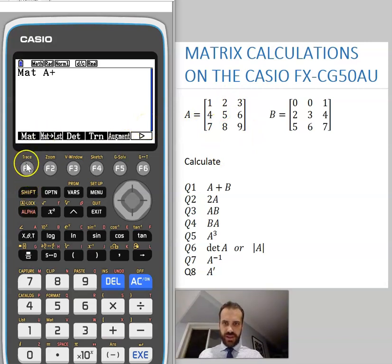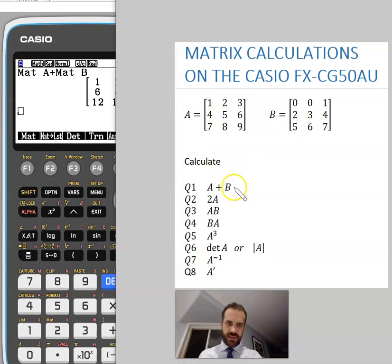Plus, and then matrix, and then alpha B. And that's matrix A plus matrix B. So I've done that first question. Tick it off.